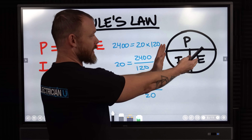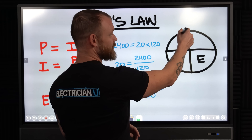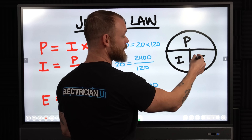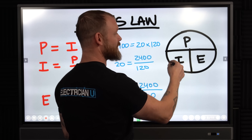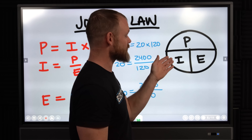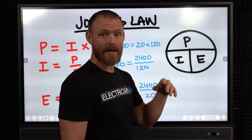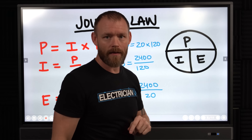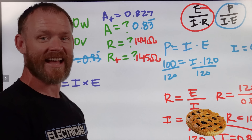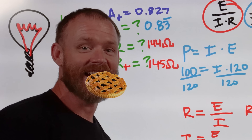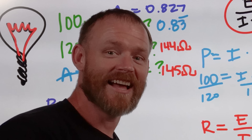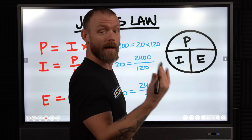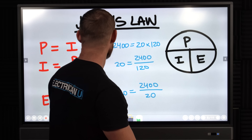So very similar setup: instead of E equals I times R, now we have P equals I times E. I just think of pie — P-I-E. That's how I remember it.